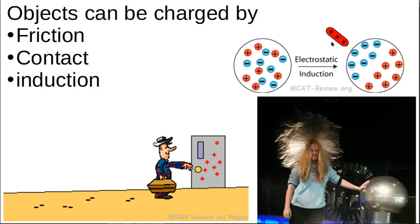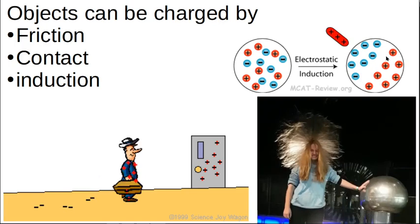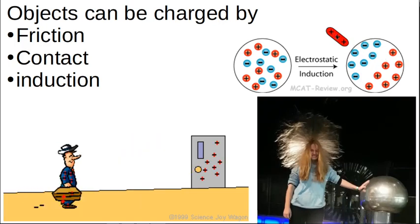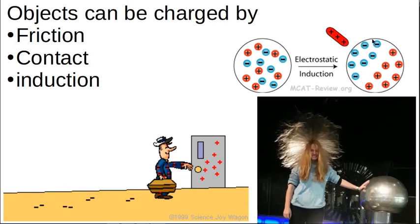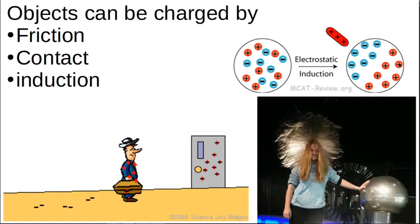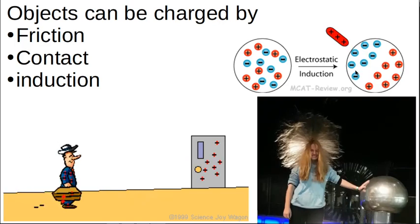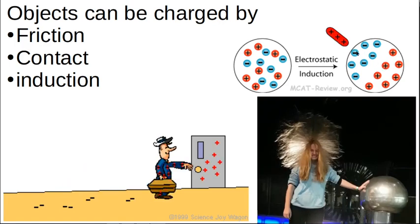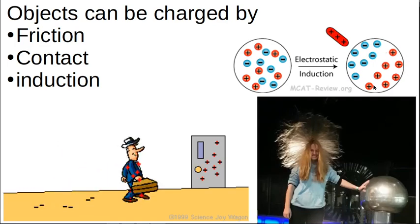And electrostatic induction is when you bring a charged object near an object that is neutral, or it can even be charged, and all the electrons are either repelled or attracted to the object without it even touching. So this portion of the object gets one charge and the other portion gets another charge. So this is charging by induction. Only the electrons will move. So either if this is positively charged, the electrons are attracted this side. If this is negatively charged, the electrons will be chased away to the other side. But this object is neutral still until you touch it to something else.